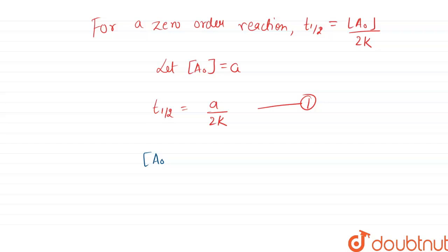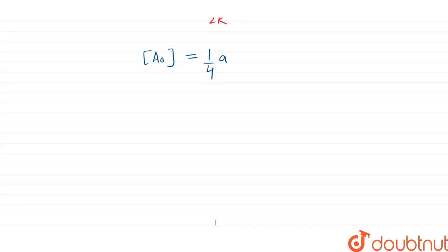Now according to question, the initial concentration is reduced to 1 by 4. That means 1 by 4 of A, initial concentration is this.